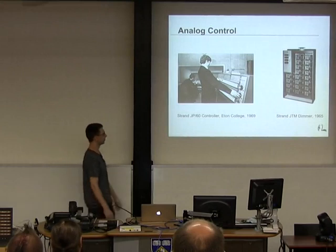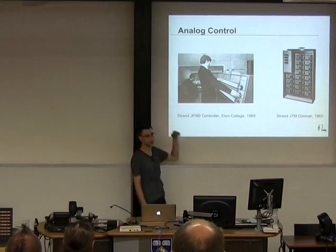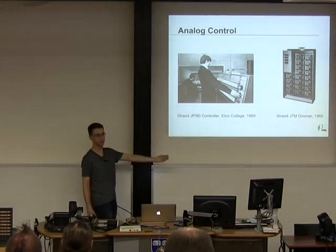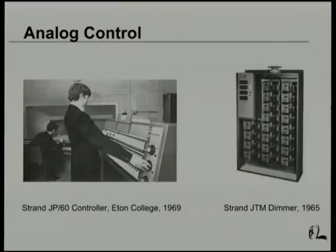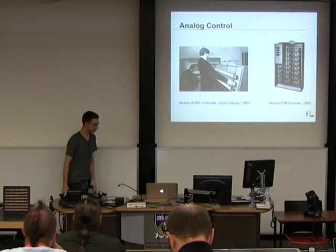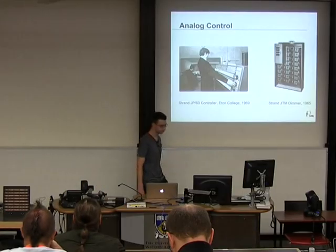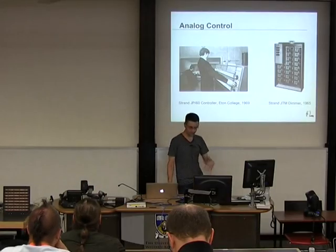The problem with this system is that it's all analog control — typically 0 to 10 volts — so you have massive thick cables, even for a relatively few channels, running from the back of the theater to the front. Some of the very earliest desks were actually live control, switching very high voltages. These are the analog control desks, and that continued for a while. 60 channels was great for the theaters of the day, but people wanted more and more channels as they wanted more lights.